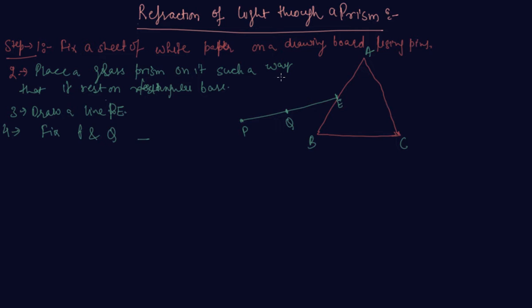This face is AB and this face is AC. Look through AC for the images of P and Q. Fix two more pins at points R and S. You will see the images of these points here at R and S.